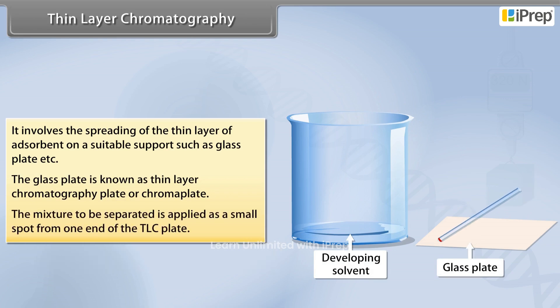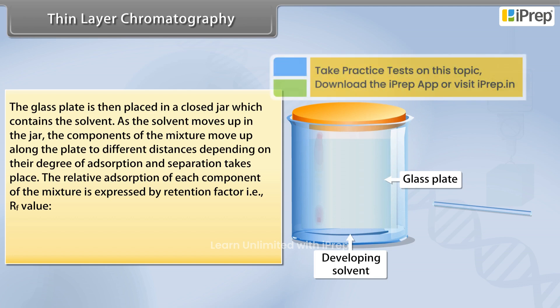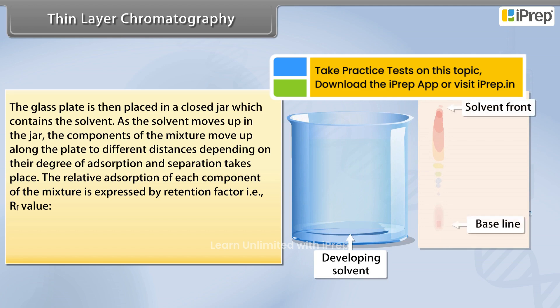The mixture to be separated is applied as a small spot at one end of the TLC plate. The glass plate is then placed in a closed jar containing the solvent. As the solvent moves up the jar, the components of the mixture move up along the plate to different distances depending on their degree of adsorption, and separation takes place.